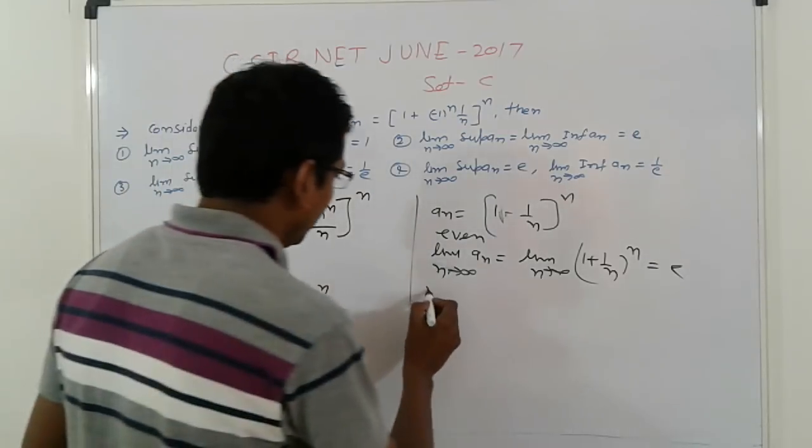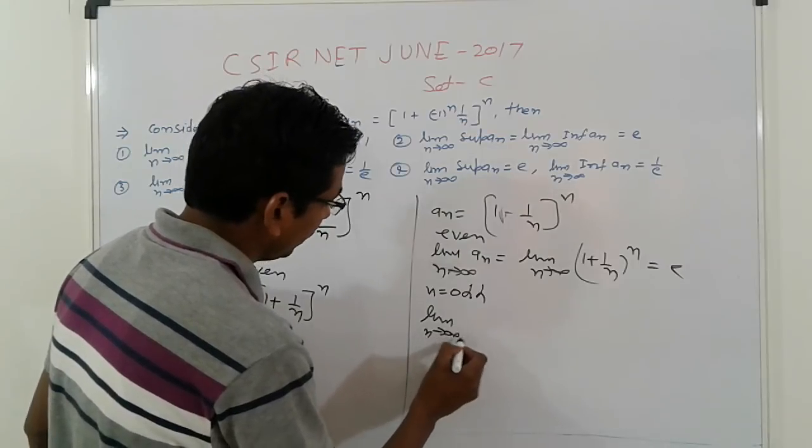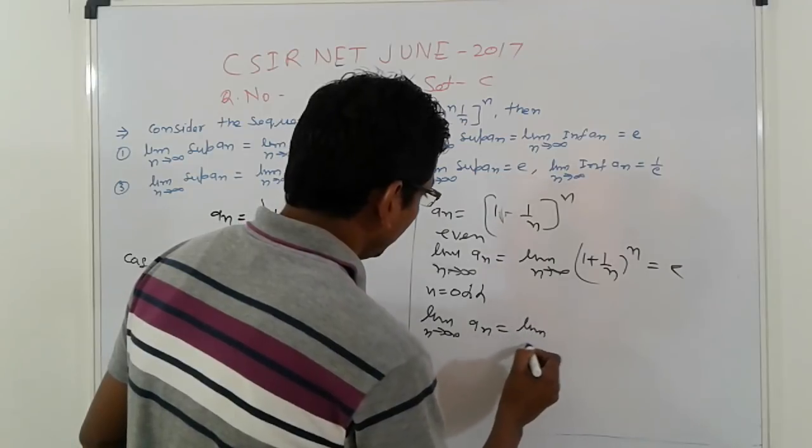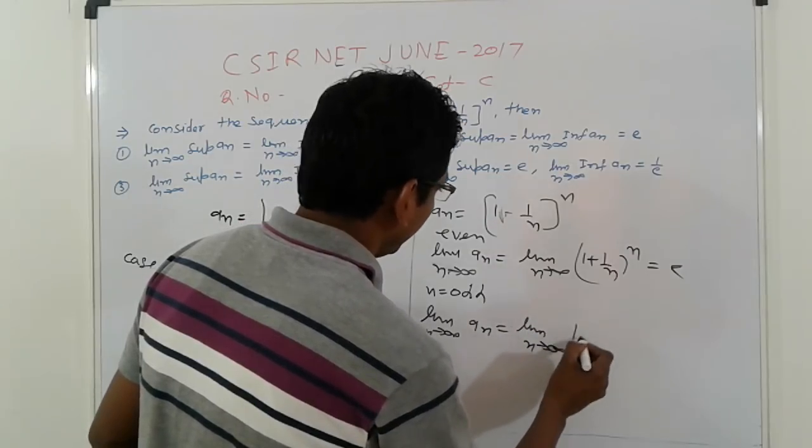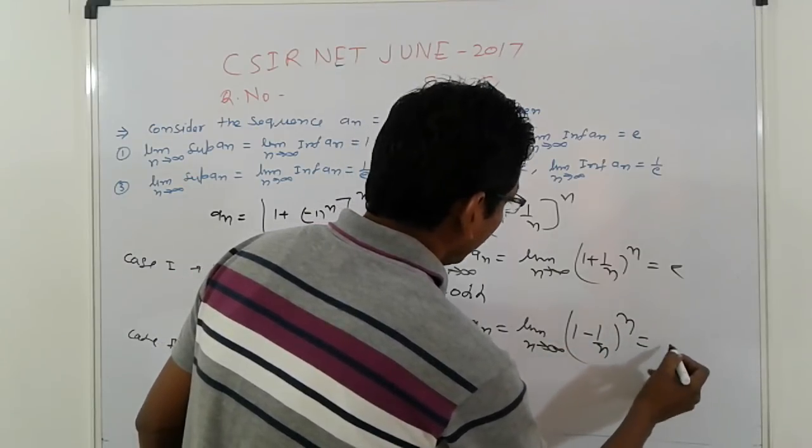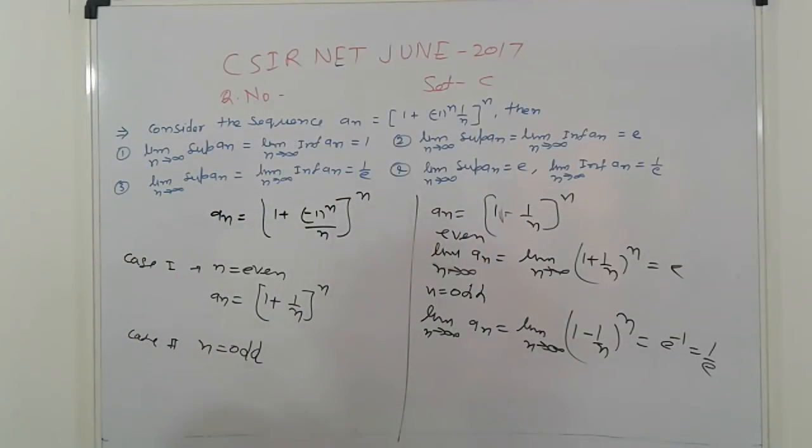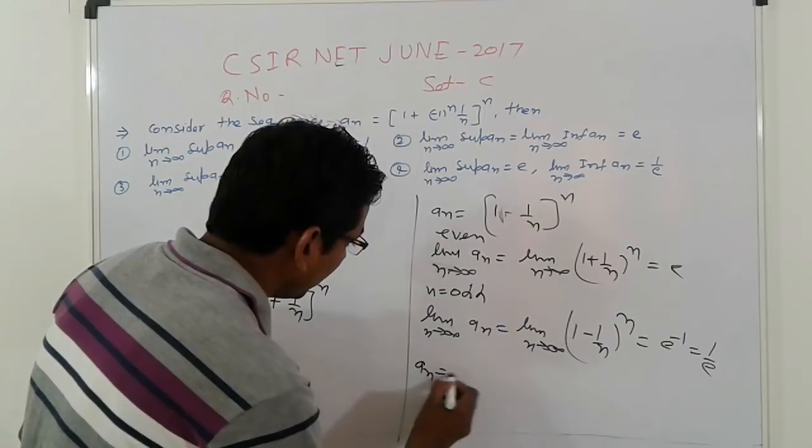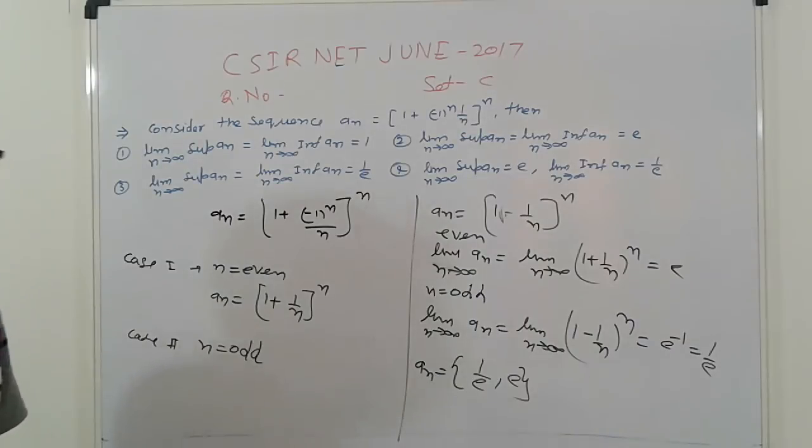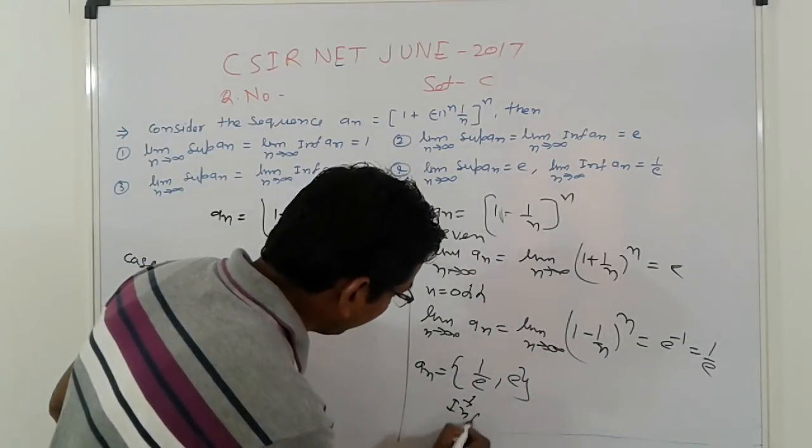And next, for n equal to odd: limit n tending to infinity An is equal to limit n tending to infinity (1 minus 1 upon n) raised to power n. That is e raised to minus 1, otherwise 1 upon e. So the set elements, An elements are 1 upon e and e. So which is infimum and which is?